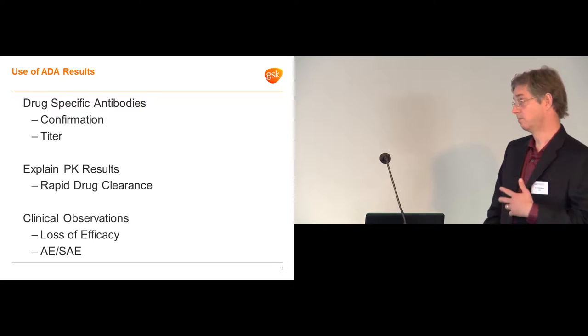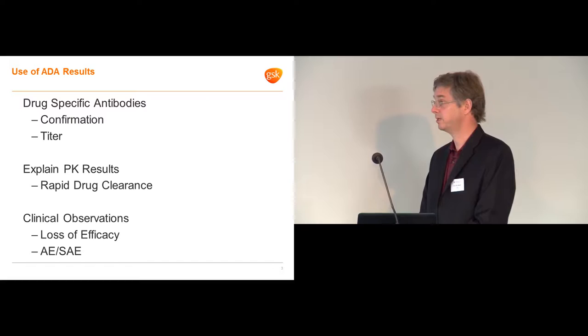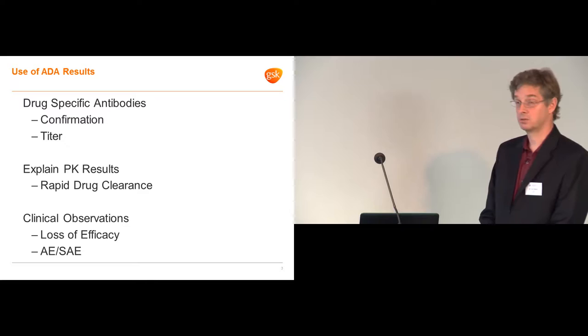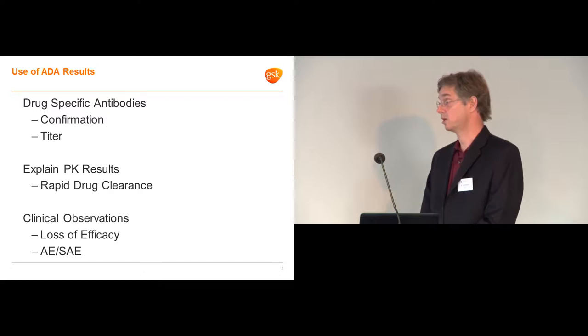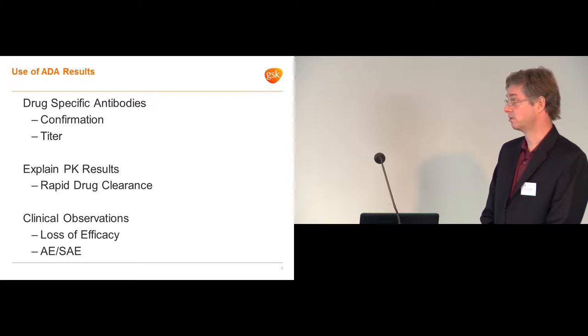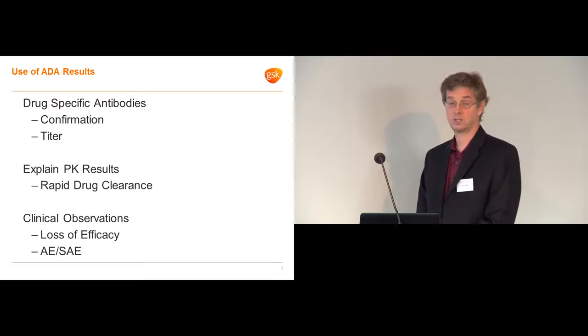You always have to look at those in context to either PK results or the clinical observations. And as was mentioned before, if you develop a binding antibody, that may sort of speed up the clearance, or you may have a sustaining antibody response. And so the ADA result could help sort of explain aberrant observations in a PK profile. And similarly, for the clinical observations, if your patients have loss of efficacy, or you start seeing some adverse or serious adverse events, ADAs may be able to help explain that.